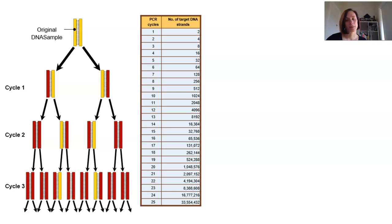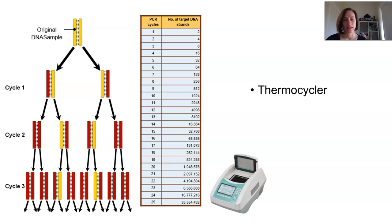Now, this whole process has been automated and will take place inside of a thermocycler. And this allows the three steps, the denaturation, the annealing, and the extension, to occur over and over again, hence the chain reaction part of the PCR name.